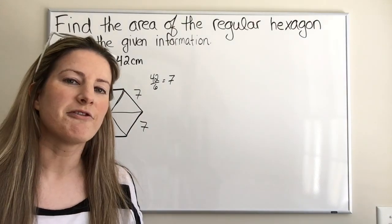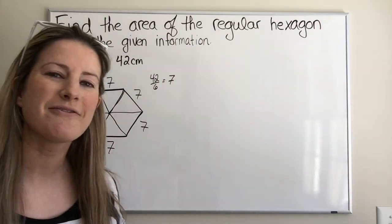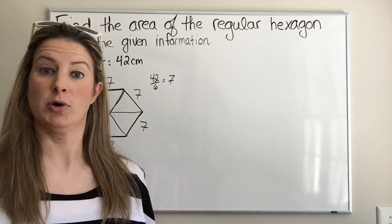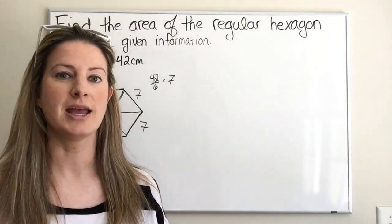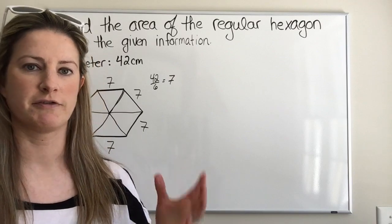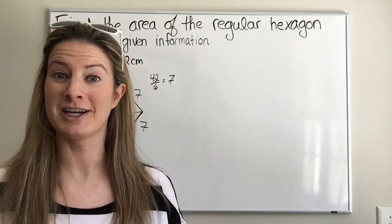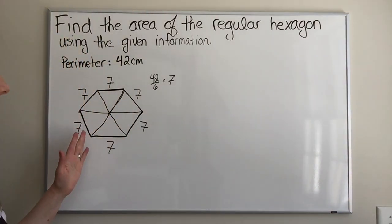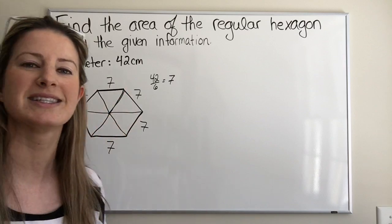We know how to find the area of a triangle. And because all six of these triangles will have the same area, if we find the area of one of them, we can just multiply it by six. That would give us the area of the entire hexagon.